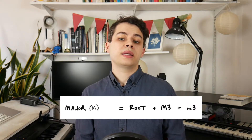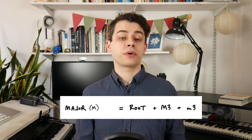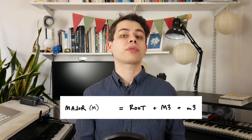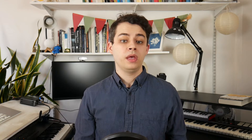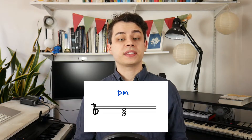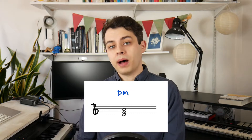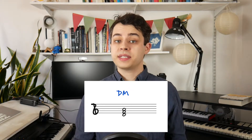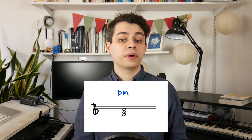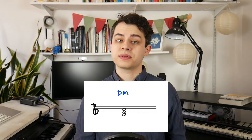All major triads, regardless of which root note the triad is built upon, follow the same formula. Every major triad contains some pitch for its root note, another pitch a major third above that root note, and a final pitch a minor third above that. Coming back to step 3, in order to fine-tune our snowman so that it sounds like a proper major triad, we need to create this major third and minor third from our recipe. Remember: there are four half-steps in a major third and three half-steps in a minor third.